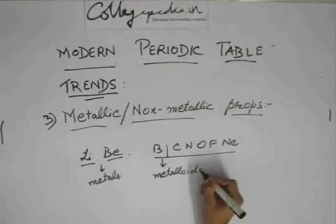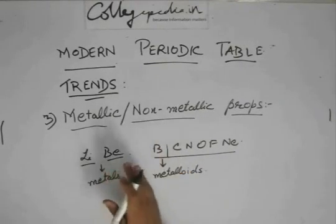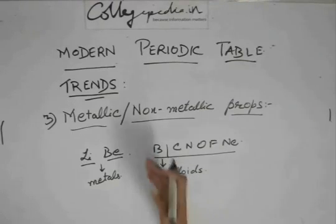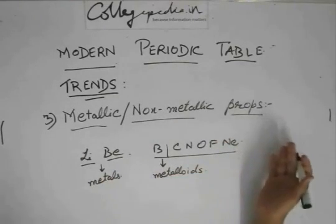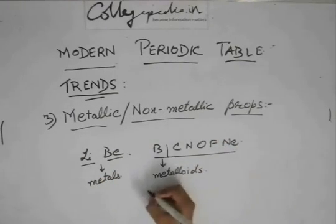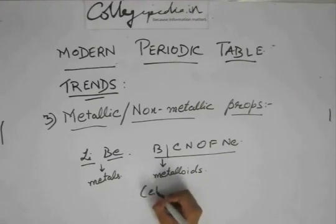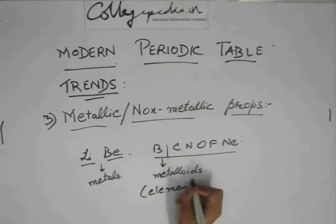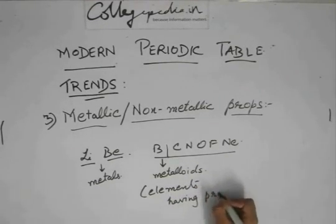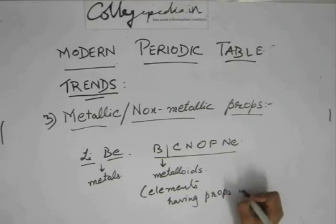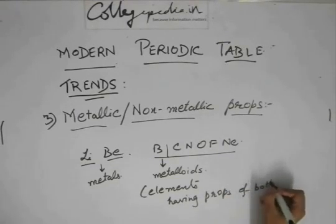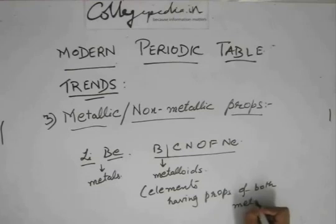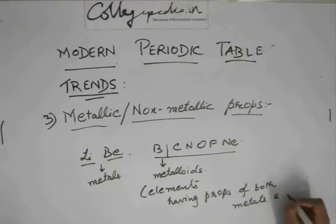Boron is a metalloid. Metalloids are nothing but the intermediates between metals and non-metals — they have some properties of metals and some properties of non-metals. So metalloids are elements having properties of both metals and non-metals.